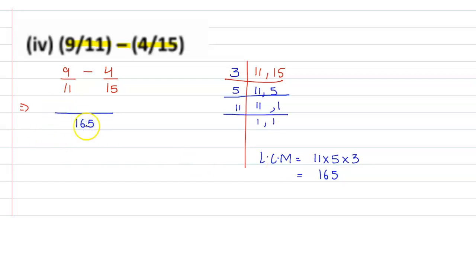165 divided by 11 gives 15. 9 into 15 we get 135. Minus: 165 divided by 15 gives 11. 11 into 4 is 44.